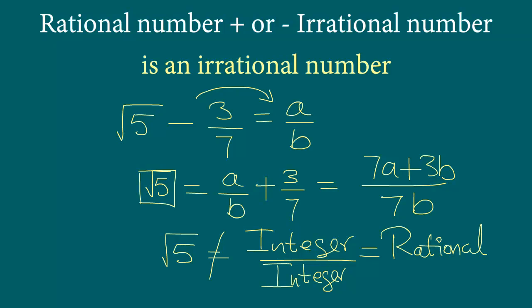Our assumption that square root 5 minus 3/7 is a rational number — that assumption is wrong — proving the fact that this expression is indeed an irrational number.